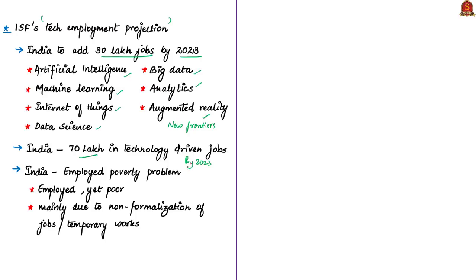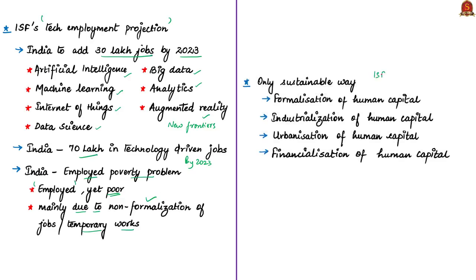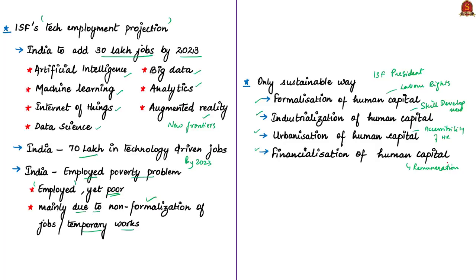The article notes that India has an 'employed poverty' problem — people are employed but under poverty, mainly due to working in the unorganized sector as temporary workers because of non-formalization of jobs. The only sustainable solution according to the president of ISF is the formalization, industrialization, urbanization and financialization of human capital. Formalization gives labor rights and associated benefits; industrialization helps in skill development; urbanization makes needed resources available and accessible for companies; and financialization remunerates the workforce at commensurable levels to bring people in temporary workforce out of poverty.